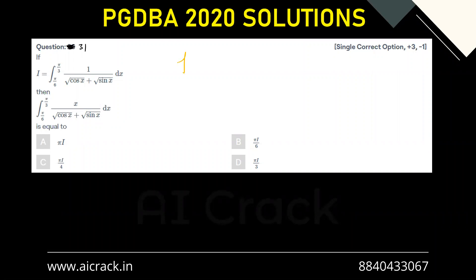So basically if I apply f of a plus b minus x property, then denominator won't change and also we'll have a difference in the numerator. We'll get a minus pi by 2 minus x over here.